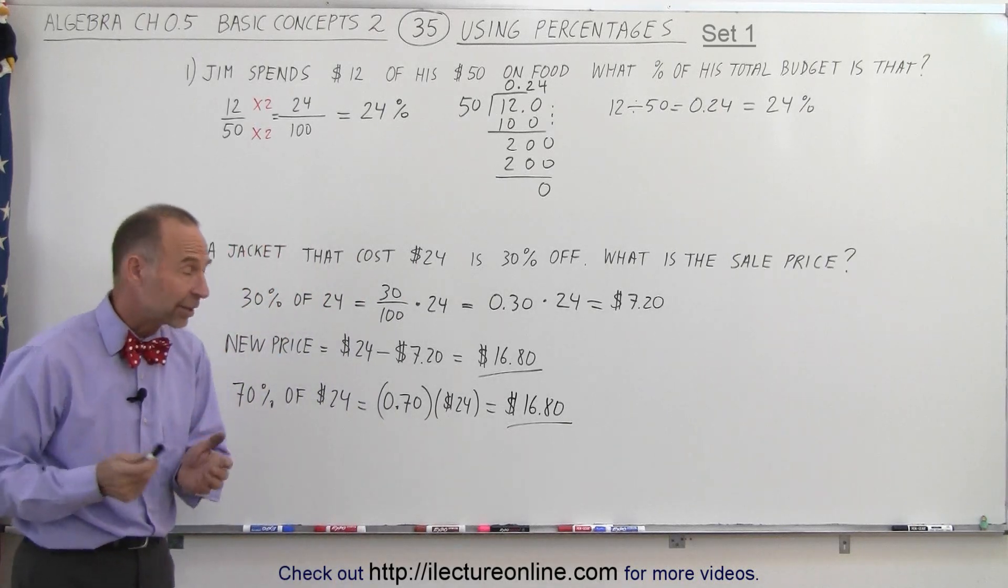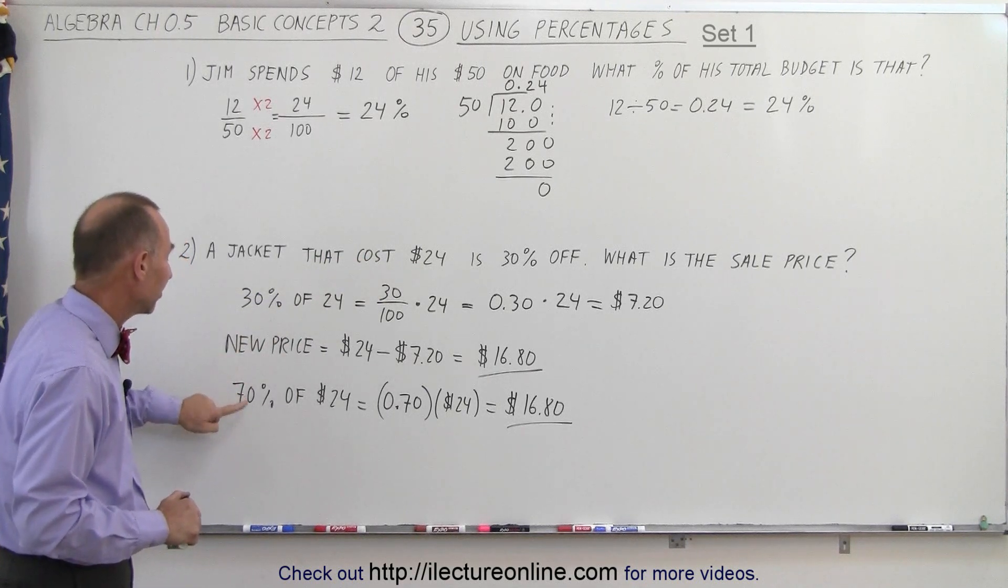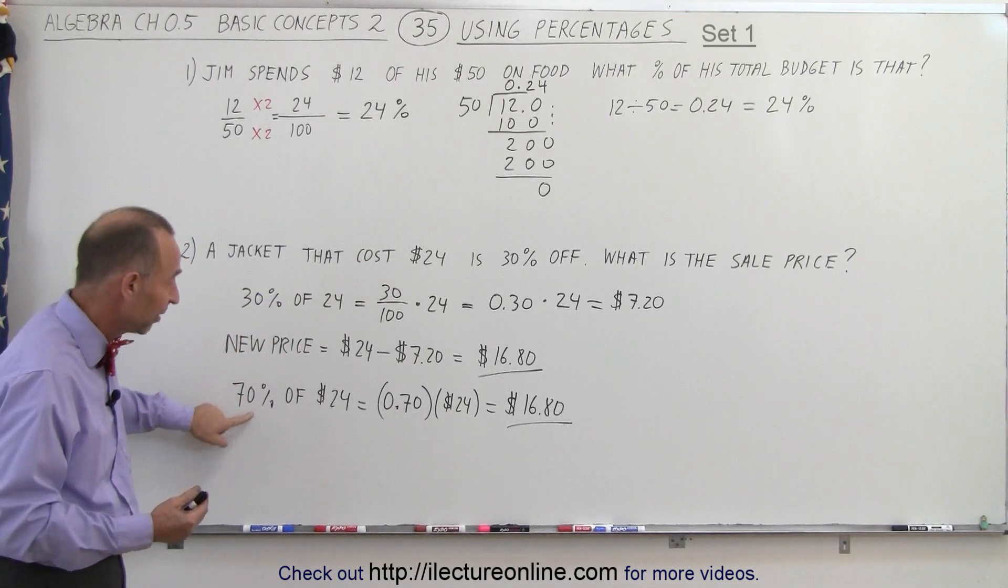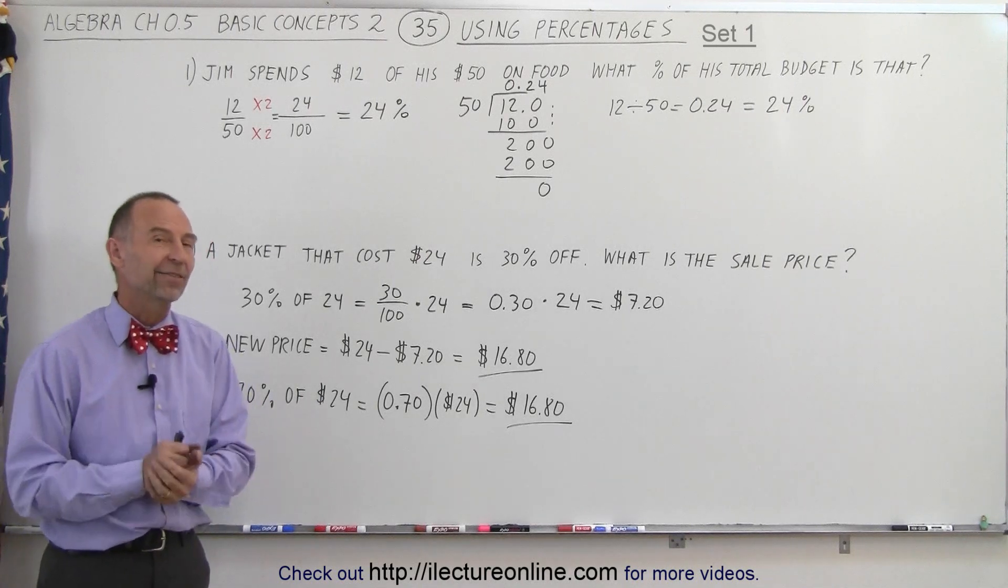So there are two ways to attack the problem. We can subtract the 30% from the original price, or we can calculate the 70%, which is what would be left. Either way, you get the same result, and that's how it's done.